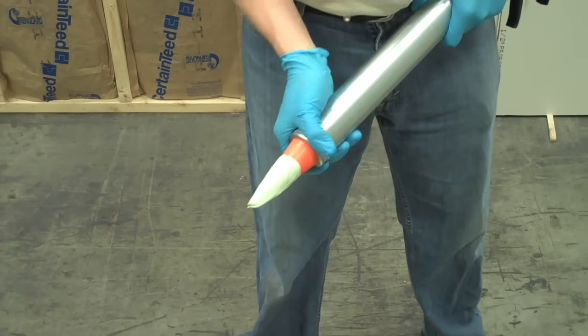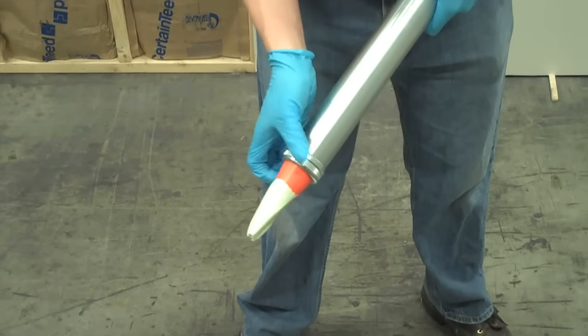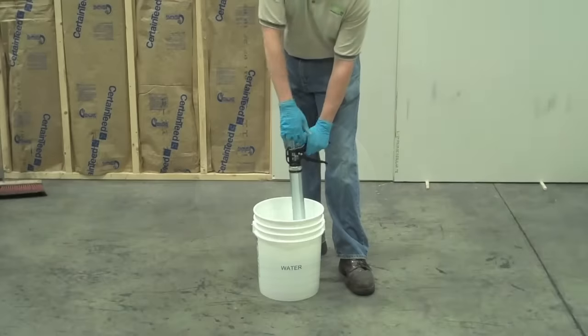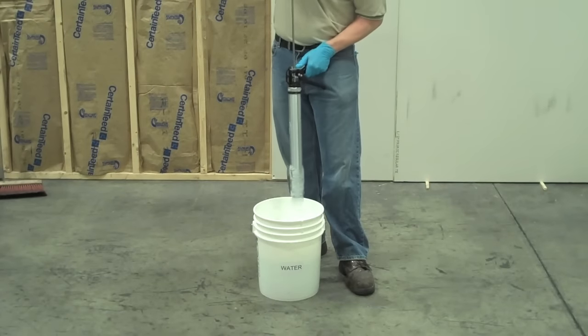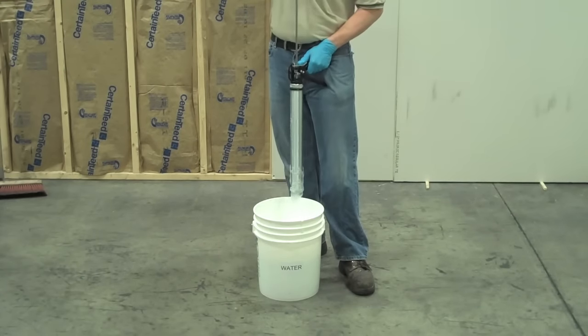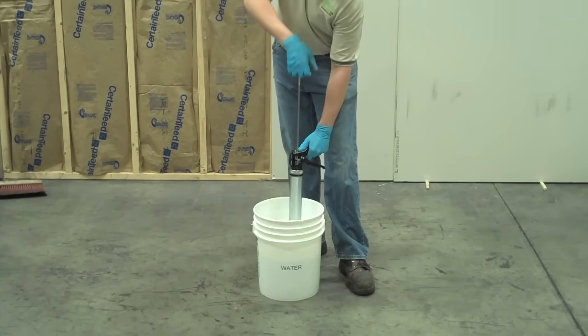When you are finished with your applicator tool, it is necessary to clean the tool so the compound does not cure and affect future performance of the internal seal. It is recommended that you remove the nozzle ring and nozzle to soak in warm, soapy water and cycle the pail applicator tool 10 to 12 times. Taking these steps will ensure your applicator tool is ready for your next green glue project.